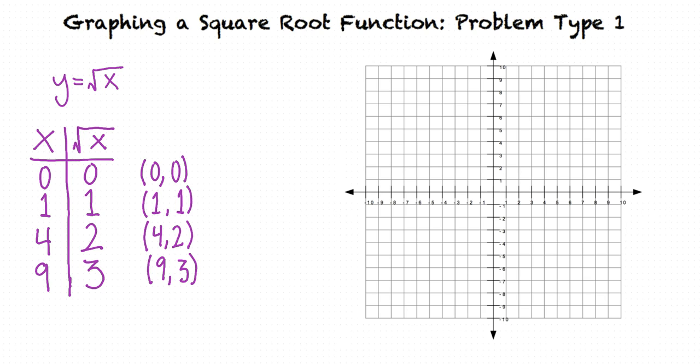This tells us that the graph of this function will include the points (0,0), (1,1), (4,2), and (9,3). The complete graph of this function looks something like this.